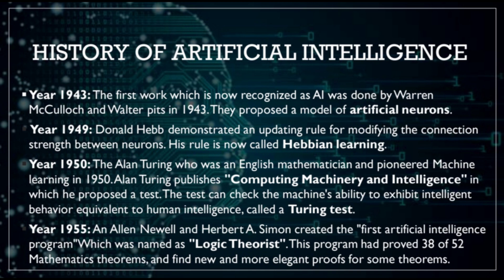In the year 1943, the first work which is now recognized as AI was done by Warren McCulloch and Walter Pitts. They proposed a model on artificial neurons. In the year 1949, Donald Hebb demonstrated an updating rule for modifying the connection strength between neurons. His rule is now called Hebbian Learning.